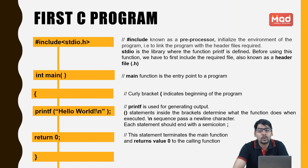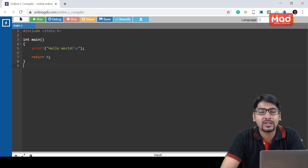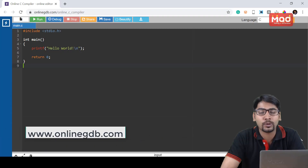After going through the first C program, let us together execute it on an online compiler and check the final output. Friends, to execute and compile a program, we are going to use an online website called OnlineGDB.com.